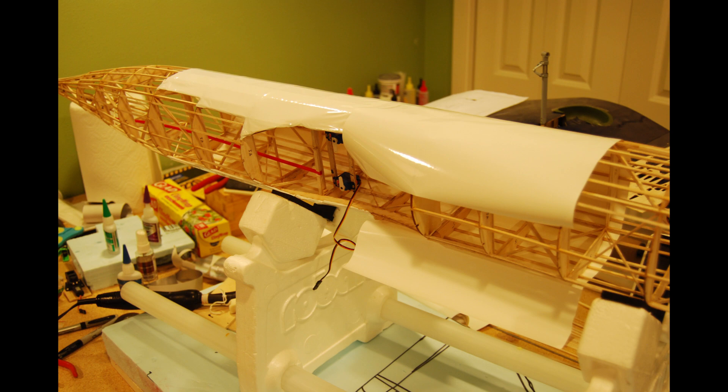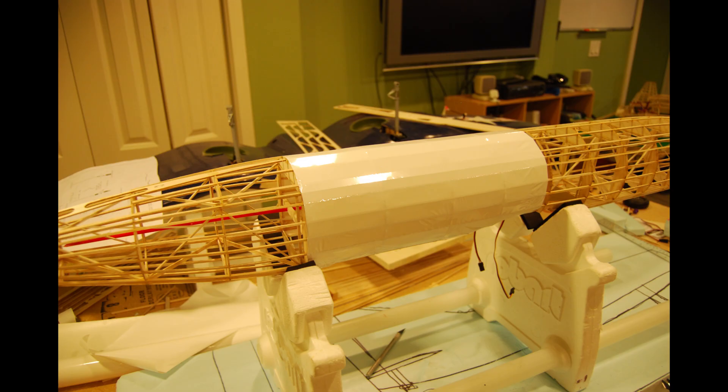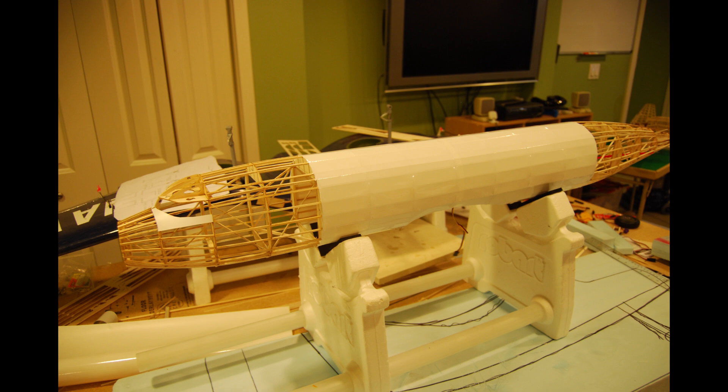Then I started covering the fuselage with ultra coat, normal ultra coat white. I tried to hide the stringers. You really had to do it in small patches.